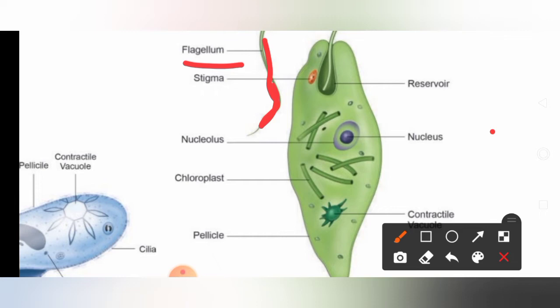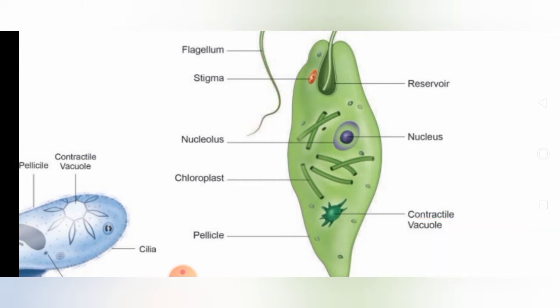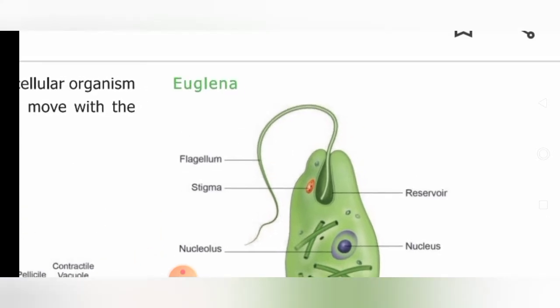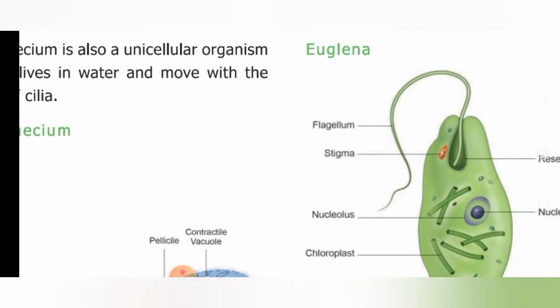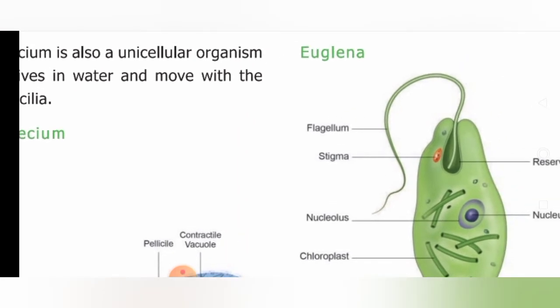Euglena also has contractile vacuoles, and it undergoes excretion, locomotion, etc. So euglena, paramecium, and amoeba are the three unicellular organisms we have discussed in our lesson.